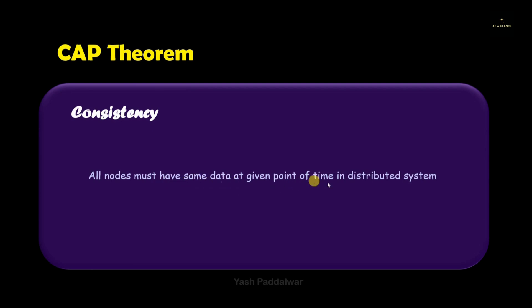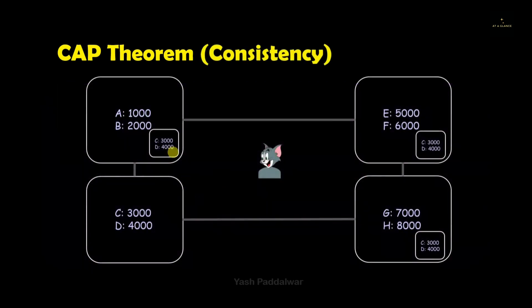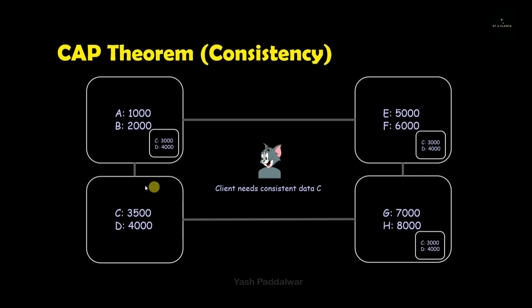Now let's move on to consistency. Consistency says that all the nodes must have the same data at any given time in a distributed system, which means all nodes must always contain the updated data. This doesn't assure that the data will always be available. Using the same example: the node containing data C and D has replicas in all other nodes. Now a client wants the data stored in C, but during this time another client has changed the data in C from 3000 to 3500. The consistency property says that whichever data has been manipulated, the replicas should also be updated with the same data.